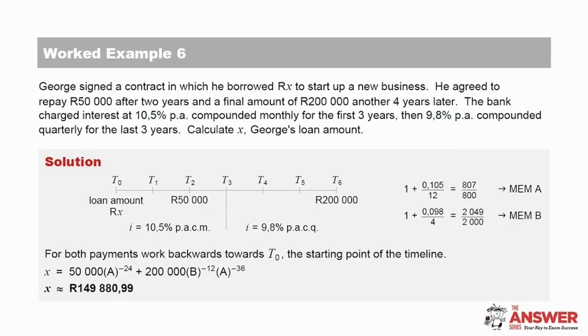Here is the solution. Let's have a look first at the timeline with years as our time periods. X is the loan amount, the amount at T0. It is important that this distinction is made between the loan amount and the amounts at T2 and T6. Then the interest rate change indicated by the vertical line, here showing the change from the rate for the first 3 years compounded monthly to the rate for the last 3 years compounded quarterly.